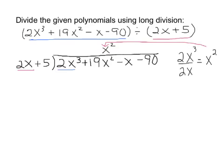So we figured out how many times, and now the process starts by taking that term, the x squared, and multiplying it by each of the terms in the divisor. So we're going to take x squared times 2x, that'll give us 2x to the third, and we'll write it right below the 2x to the third in the dividend. And then we'll take x squared times the 5, that gives us 5x squared, and write it below the x squared term, again, in the dividend.